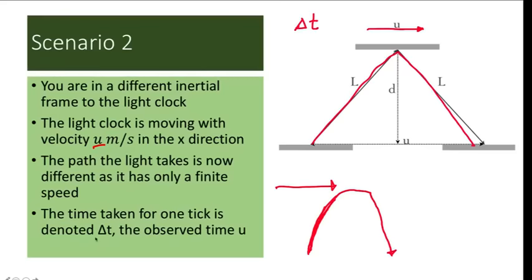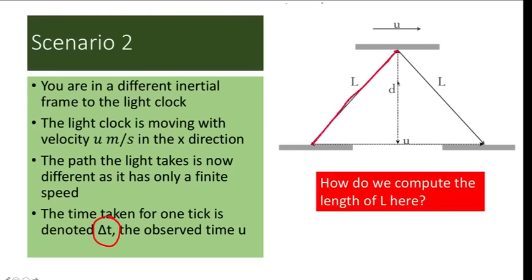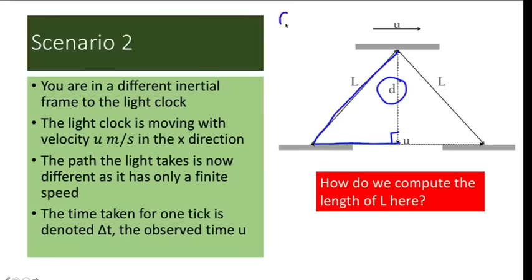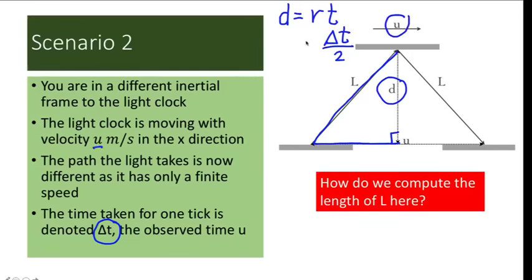The time it takes to travel going up and going down is denoted delta t. To compute the length L of the diagonal path, notice we have a right triangle where one side has length d. The other side's length equals rate times time. The time for the light to go just one way (up or down) is delta t over 2, since one full tick is up and down. The rate is u meters per second, so this side's length is u times delta t over 2. Note that delta t is one variable — the change in time.